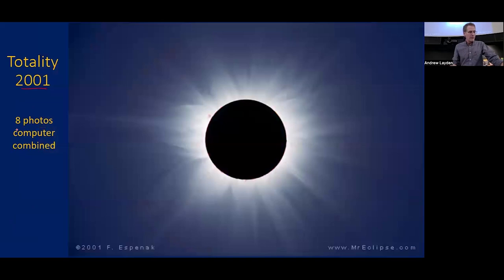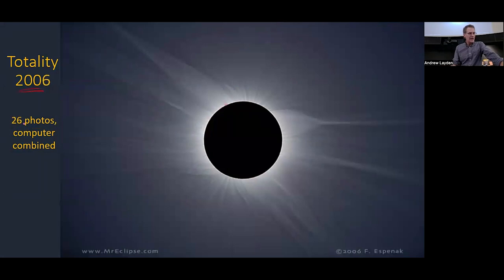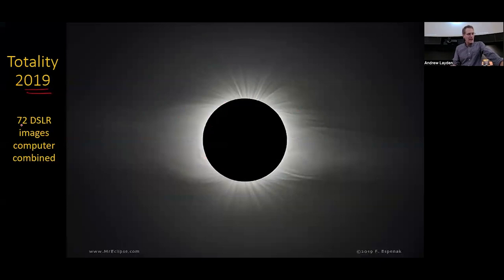Here's a different eclipse in 2001, eight photos computer combined. You can see lots of little streamers this time, almost like petals on a sunflower. More like the first eclipse, but distinct in its own way. Yet another eclipse in 2006, 26 photos computer combined. There are some streamers, but a lot of activity along the equator and polar brushes. So this is more like the dipole structure. And in 2019, Mr. Eclipse started using a digital SLR camera, so he could take a lot more and combine them. You get this really gorgeous pattern of equatorial streamers and polar brushes with that dipole structure like a bar magnet.